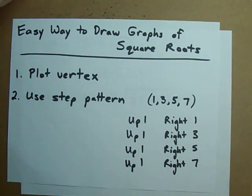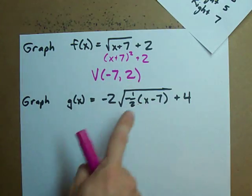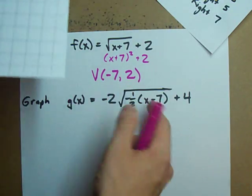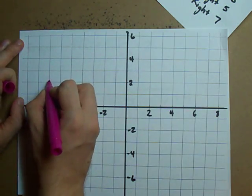So let's do this. Plot the vertex of that first one. The vertex was at negative seven and two. So let's plot that vertex at negative seven and two.